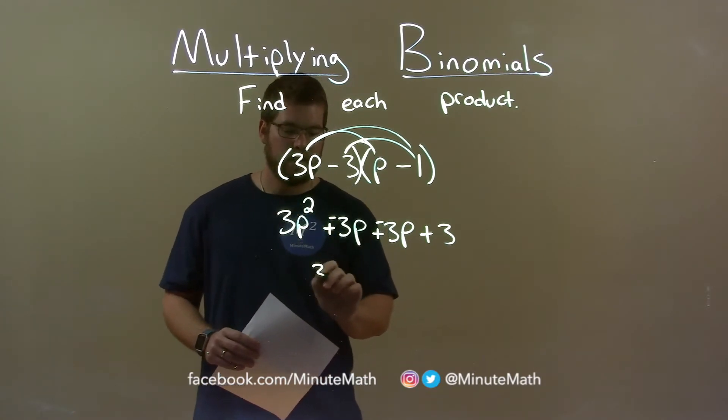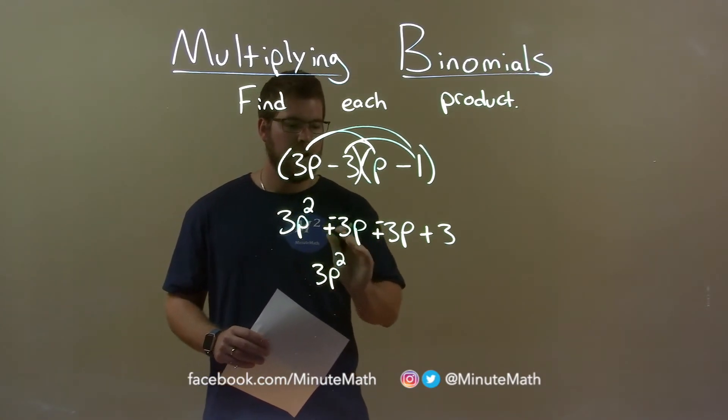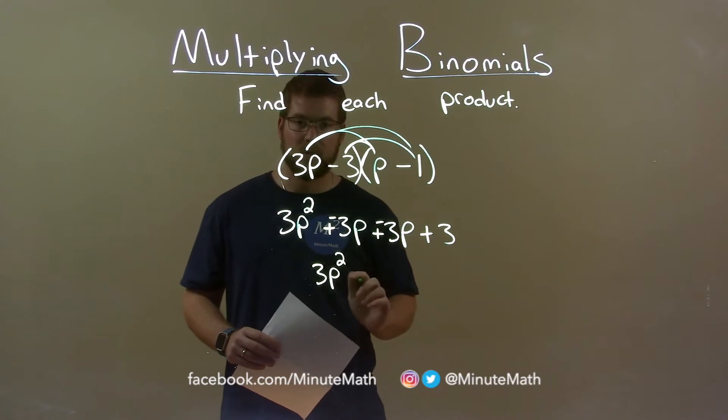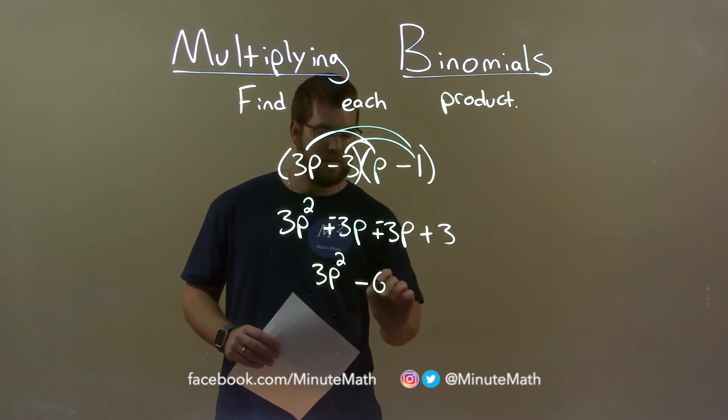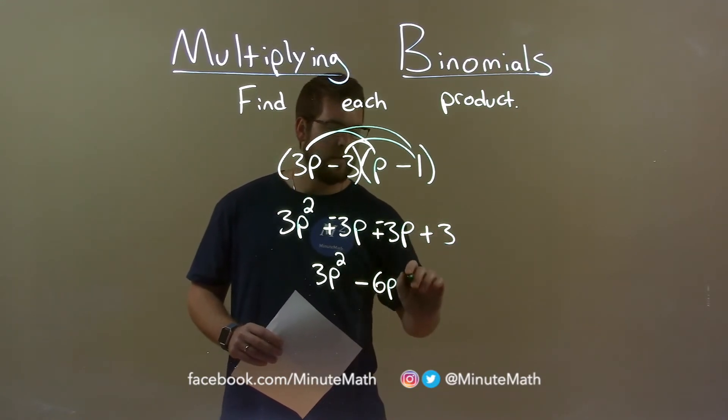This 3p squared comes down. And minus 3p plus minus 3p is minus 6p. And we bring down the plus 3.